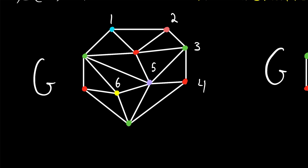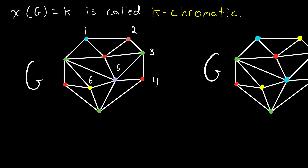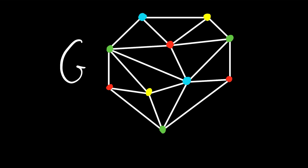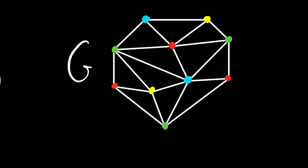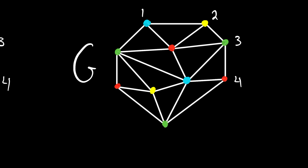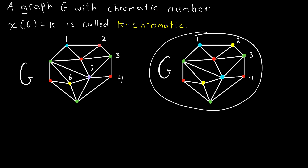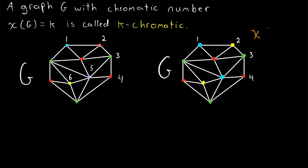Is six the minimum number of colors possible? We see that it is not, by checking out this other coloring of the same graph. This is indeed another proper coloring of the same graph, and it uses only four colors: blue, yellow, green, and red. In fact, four is the smallest number of colors we can possibly color this graph with. Thus, the chromatic number of this graph, chi of G, is equal to four.